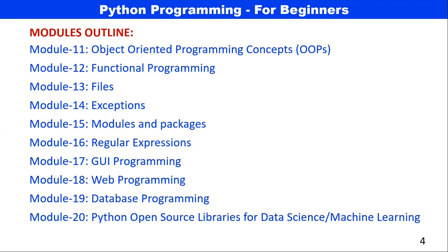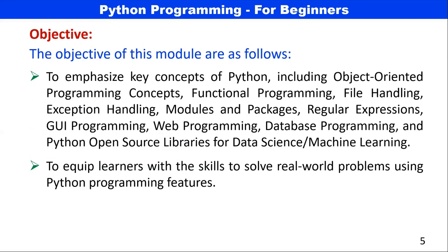Module 11: Object-oriented programming concepts. Module 12: Functional programming. Module 13: Files. Module 14: Exceptions. Module 15: Modules and packages. Module 16: Regular expressions. Module 17: GUI programming. Module 18: Web programming. Module 19: Database programming. Module 20: Python open source libraries for data science and machine learning.